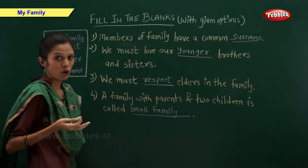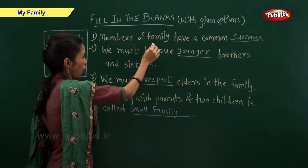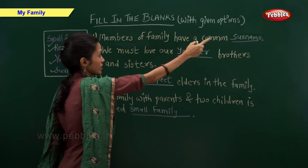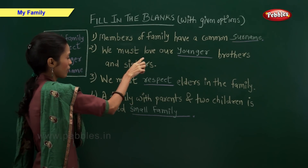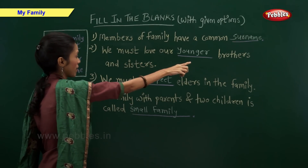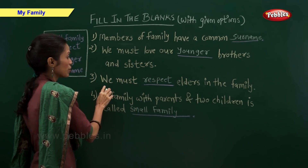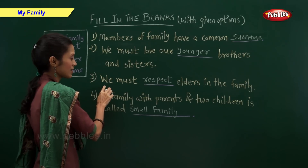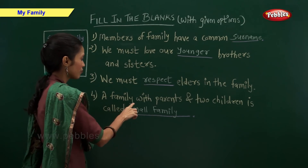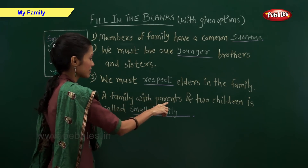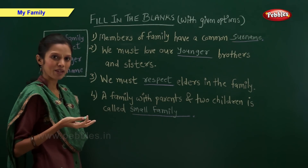So now let us summarize. Members of a family have a common surname. We must love our younger brothers and sisters. We must respect elders in the family. A family with parents and two children is called a small family.